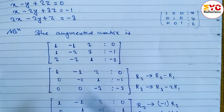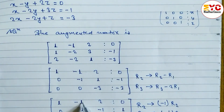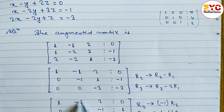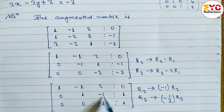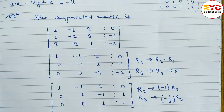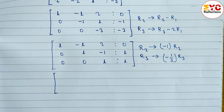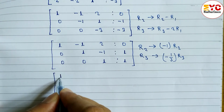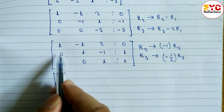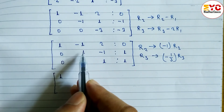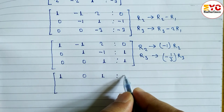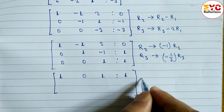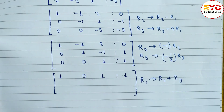Now we have leading 1s in all three rows. We need to eliminate the -1 in row 1 column 3 and the -1 in row 2 column 3. We add row 3 to row 1 (R1 → R1 + R3): 1+0=1, 0+0=0, 1+(-1)... and applying row additions. We get row 1 as 1, 0, 0, with constant 1, and row 2 as 0, 1, -1, 1, and row 3 as 0, 0, 1, 1.